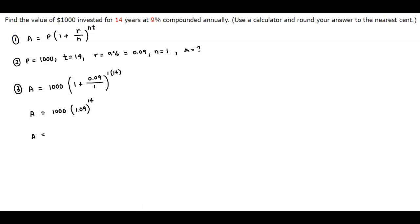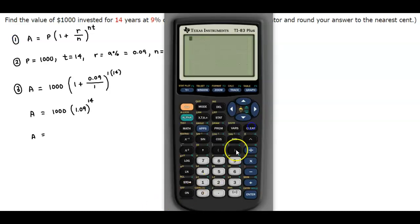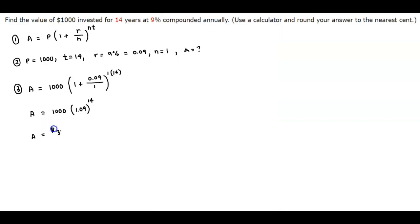So now we can go ahead and use our calculator. If we take 1,000, multiply it by 1.09, and raise that to the power of 14, then we get $3,341.73 as we're rounding it to the nearest cent. So $3,341 and that is 73 cents.